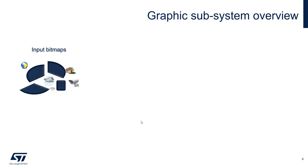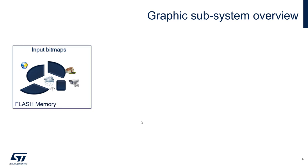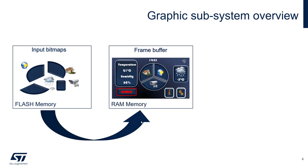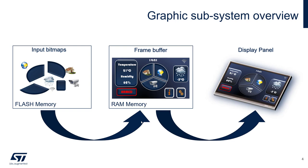This is an overview of the graphics subsystem. The inputs are bitmaps and text, which are converted into bitmaps anyway, and are stored in flash memory. From flash memory, the content is put together to fill the frame buffer, which is stored in RAM memory. Finally, this frame buffer is transferred to the display panel. So we have two processes: first, the update and build of the frame buffer, and then the partial or full refresh of the display.